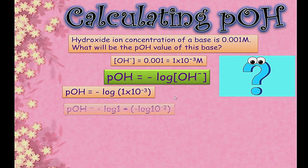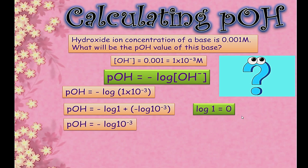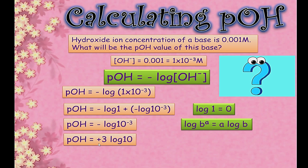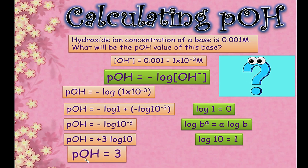Opening the bracket: pOH = −log(1) − log(10⁻³). Since log(1) = 0, that term becomes zero, leaving pOH = −log(10⁻³). Using the log power rule, the exponent comes in front: pOH = −(−3) × log(10). Since log(10) = 1, the answer is 3. So the pOH value of this solution is 3.